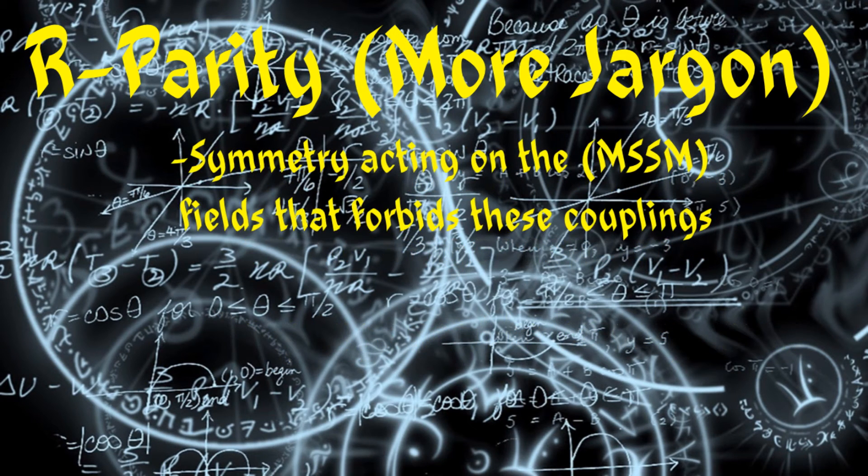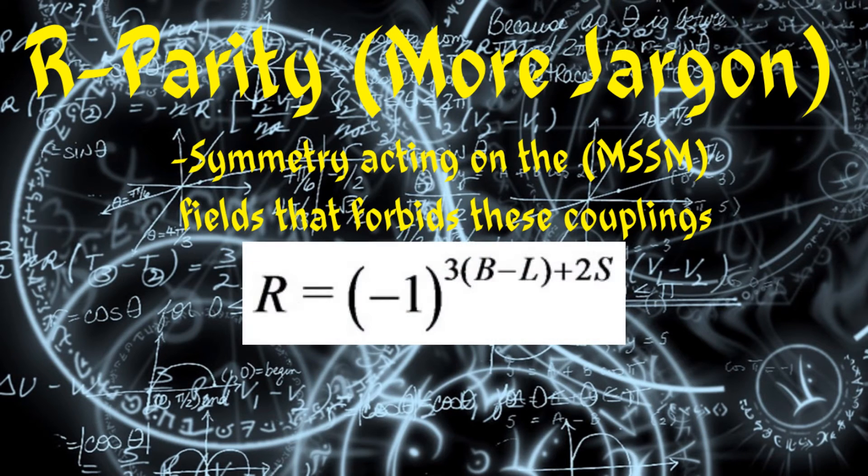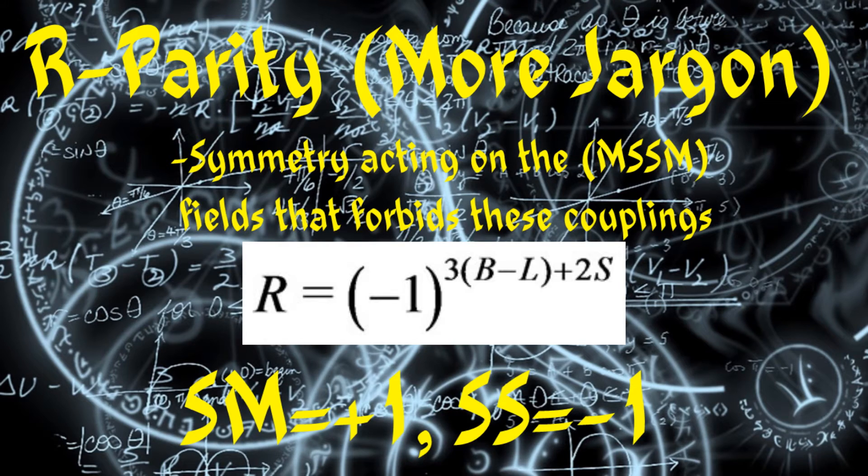R-parity is a symmetry acting on the MSSM fields that forbids these couplings and can be defined in the equation on the screen. Where s is spin, b is baryon number, and l is lepton number. All standard model particles have R-parity of plus one, while supersymmetric particles have R-parity of negative one.